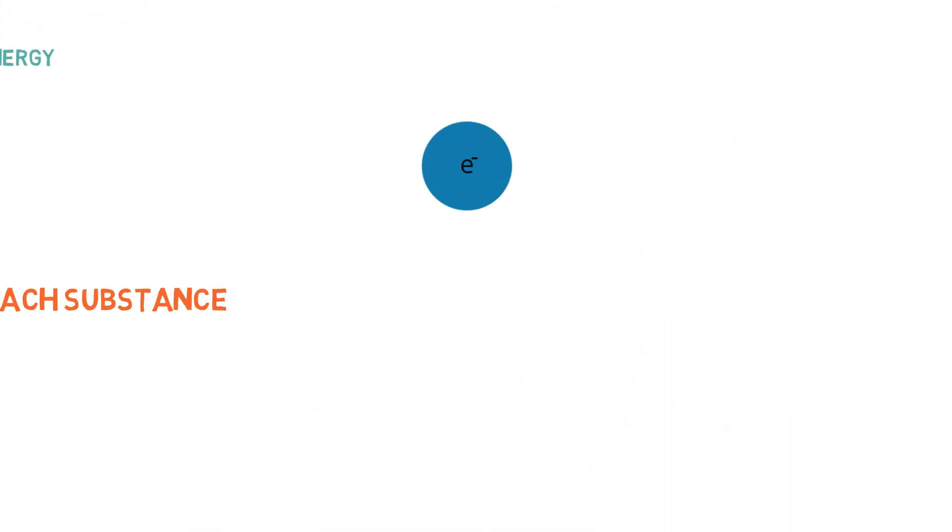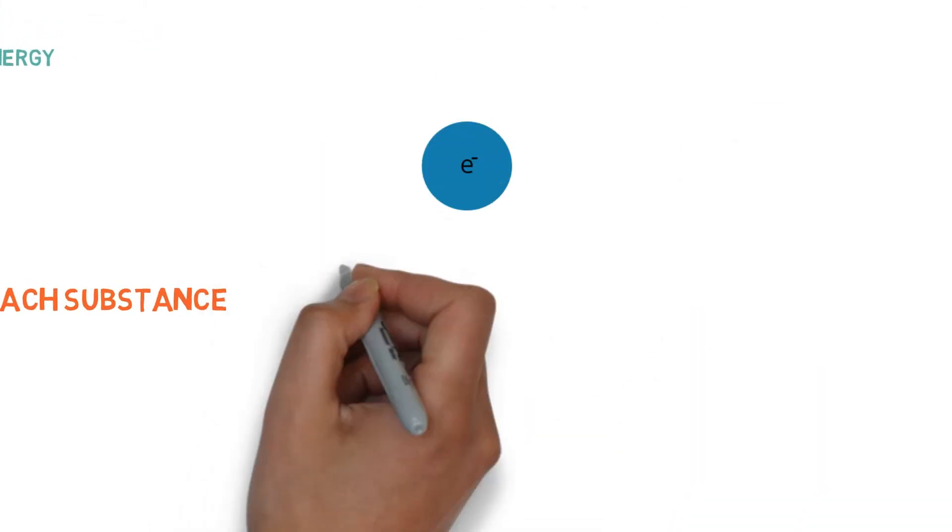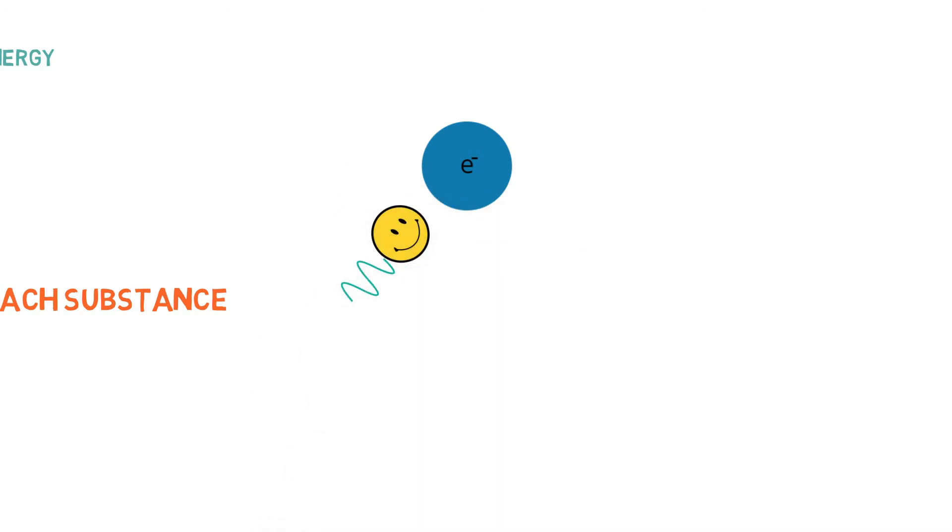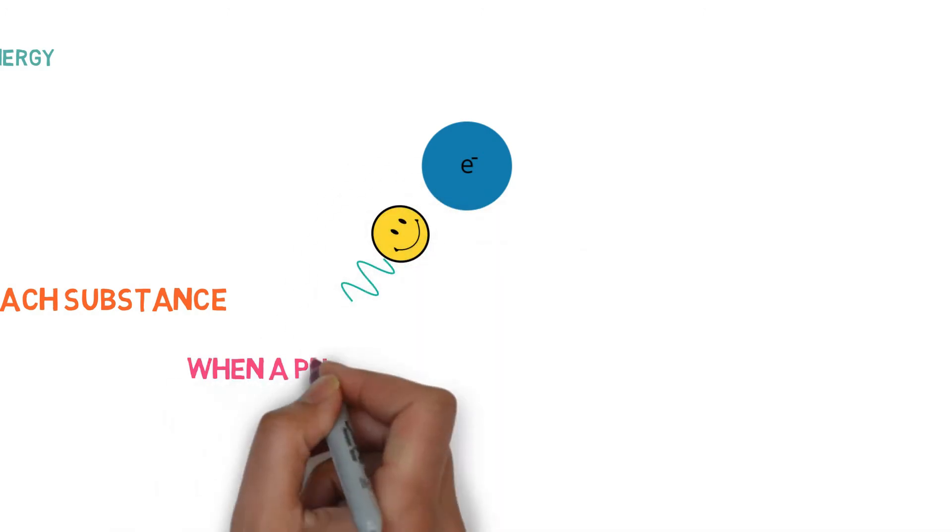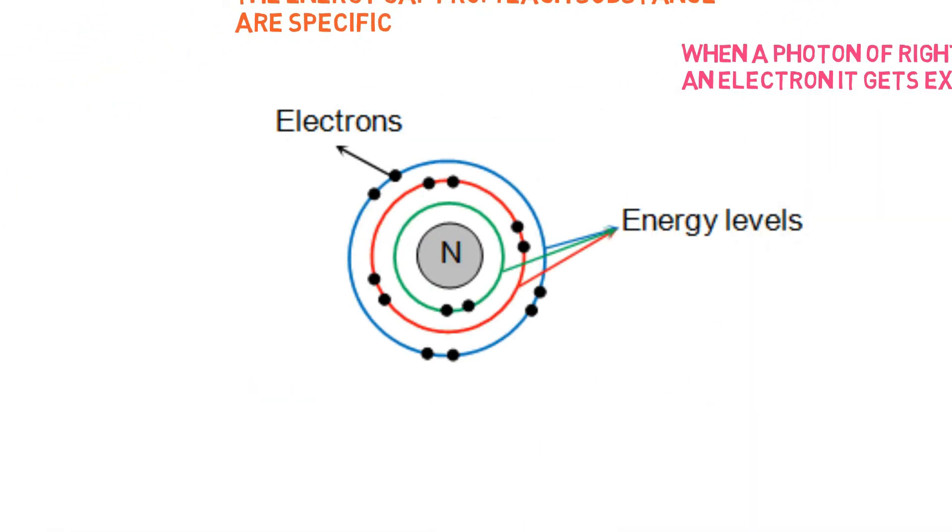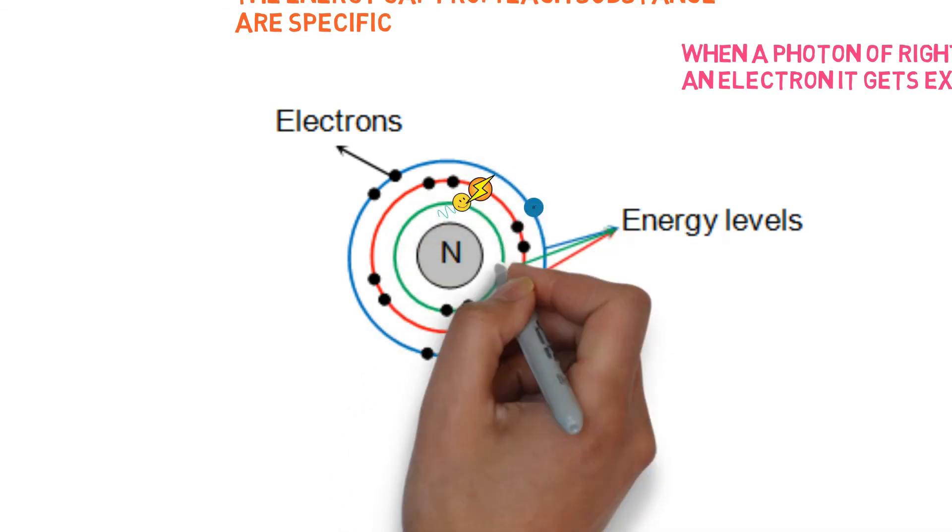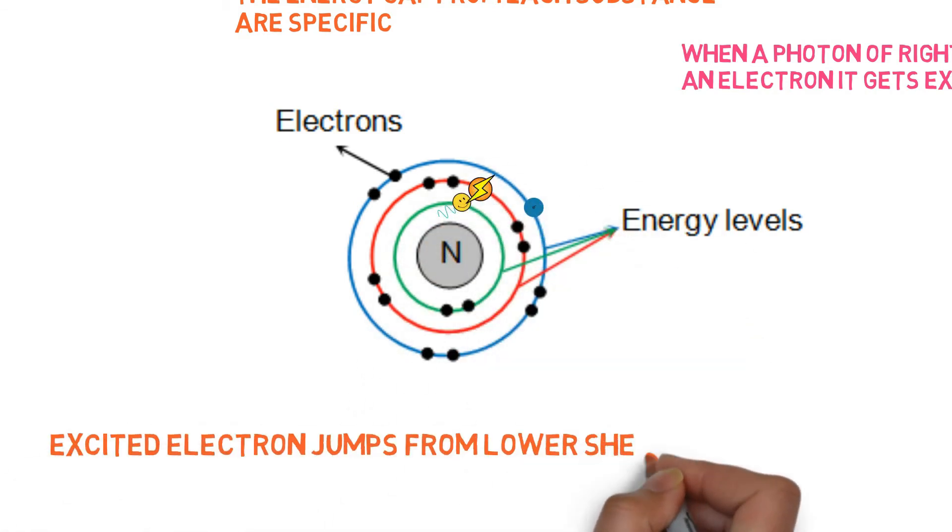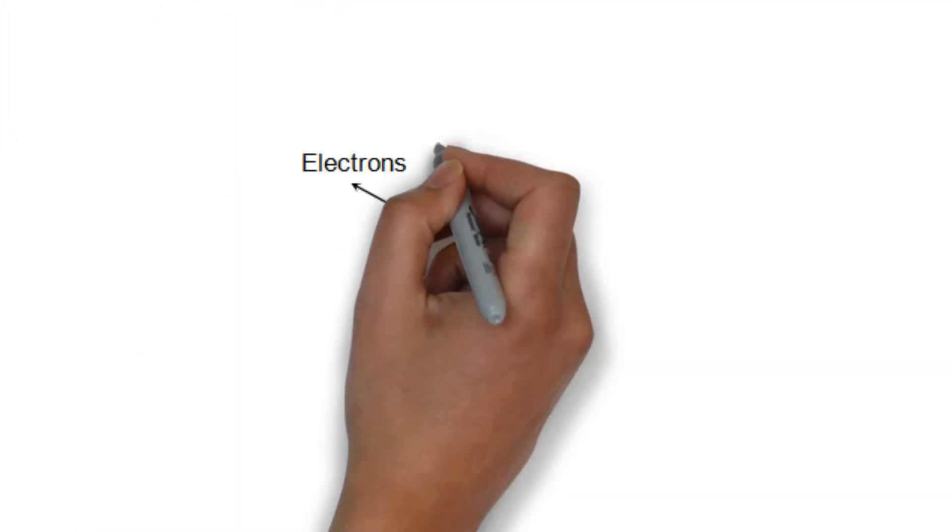When a photon that has a specific energy to it, which is equal to the energy gap, strikes the electron, the electron becomes energized. It is called an excited electron. And then this excited electron jumps from the lower shell to a higher shell depending on the energy of the photon that strikes it.